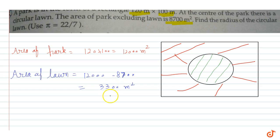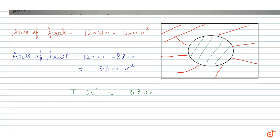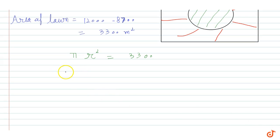Now the question is find the radius of the circular lawn. So area of lawn, πr² is equal to 3300. Now if we divide, π value is 22 by 7, so 22 by 7 into r² is equal to 3300.